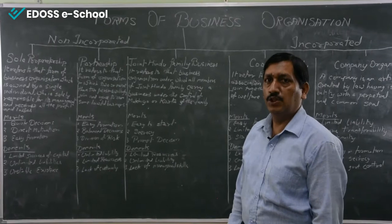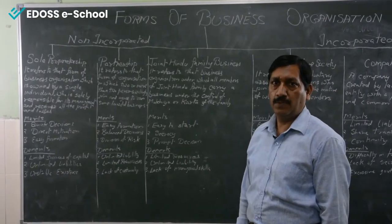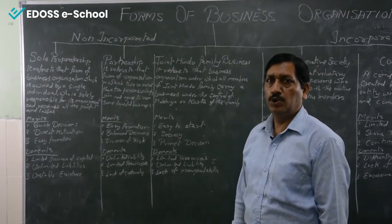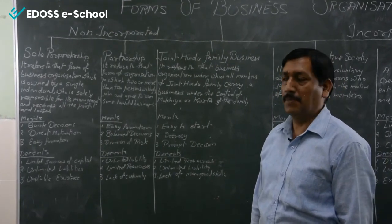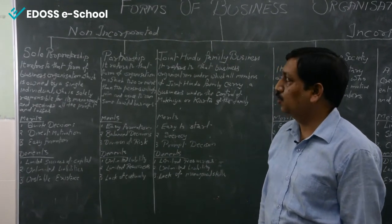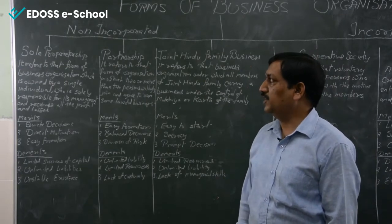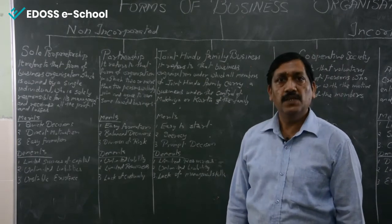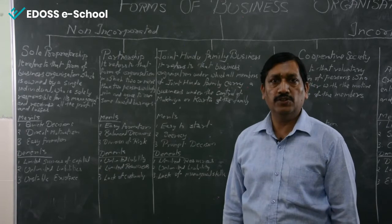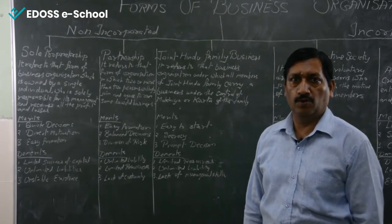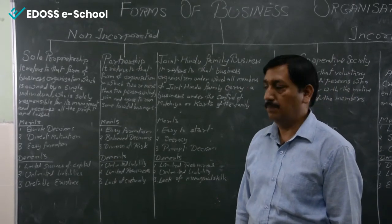We are going to start with sole proprietorship. As per its name, 'sole' means single and 'proprietor' means owner. It refers to that form of business organization which is owned by a single person, and all the profit and loss will be borne by that single person only.